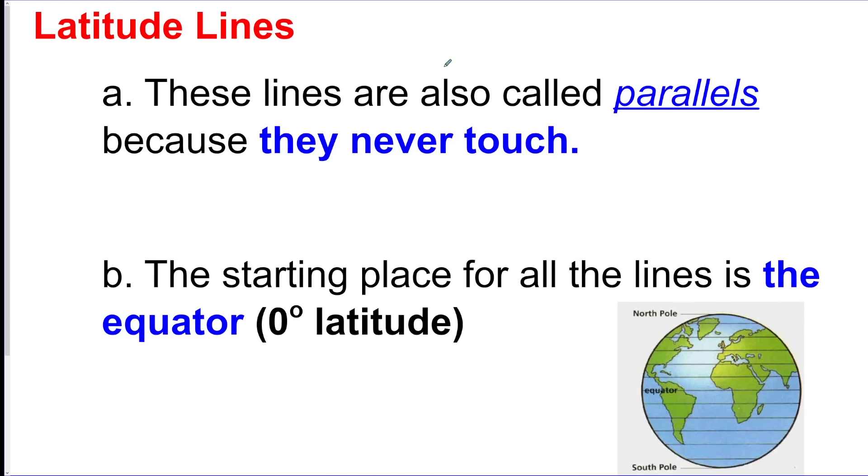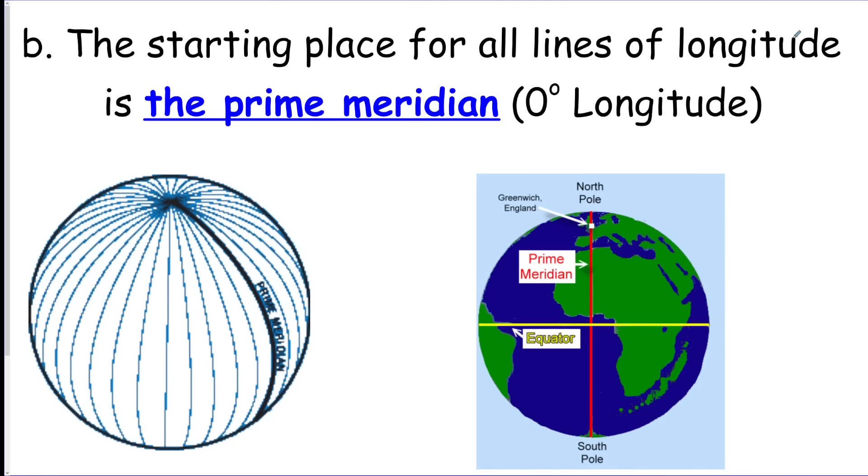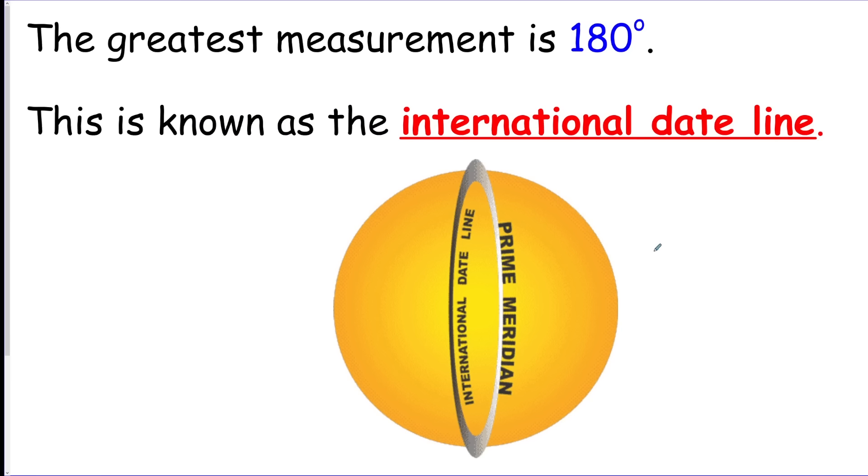All right, we got latitude lines. These lines are also called parallels. They never touch. They go left to right and they measure north to south. We start with the equator when we go to measure them. For longitude, they measure east to west. They are half spheres like this shape, and the starting point for the lines of longitude is called the prime meridian that goes through Greenwich, England. And it's actually the starting point of all the time zones. Longitude lines can go up to 180 degrees, which is on the opposite side of the prime meridian. That's called the international date line.